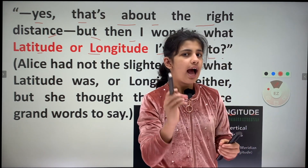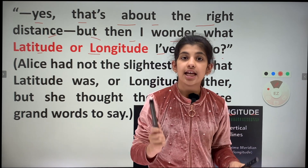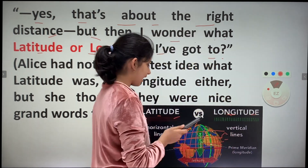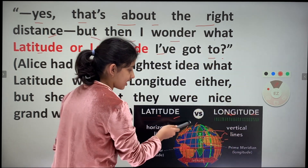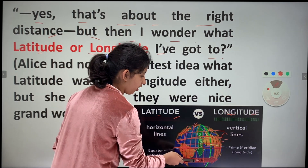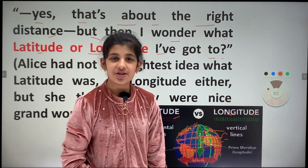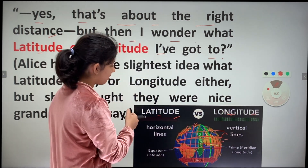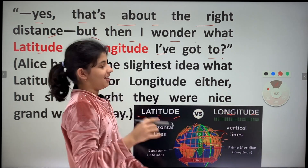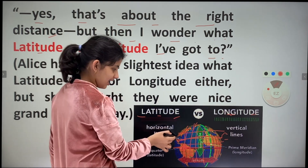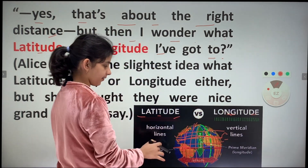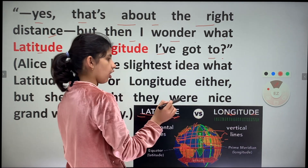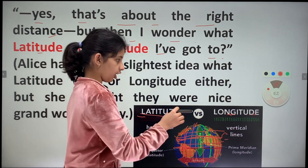Now, I will be giving you a trick so that you can memorize that this is latitude and this is longitude. And what is that trick? Latitude means that it is late and it is lying. So this line is lying. So this is why they call it latitude.